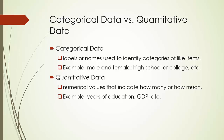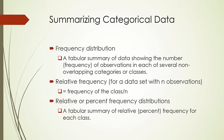Now let's see how we can summarize categorical data. Probably the most useful tool for summarizing categorical data is a frequency distribution. It is a tabular summary of data showing the number or frequency of observations in each of several non-overlapping categories or classes.